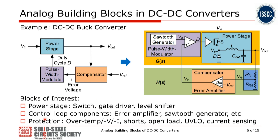To form a control loop, we have the power stage between input and output, and we use an error amplifier with a certain frequency behavior to keep the whole loop stable under all conditions — that's why it is called a compensator. The key blocks needed to build a DC-DC converter include the power stage with switch, gate driver, and level shifter, as well as control loop components including the error amplifier and a sawtooth generator. Since there is some power dissipation, protection is also necessary, covering over-temperature, over-voltage, and over-current, as well as monitoring functions like current sensing.